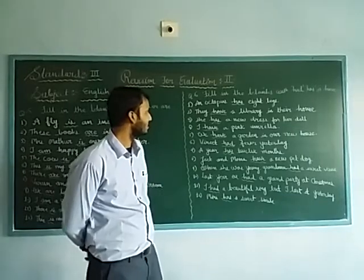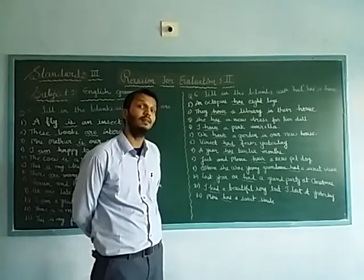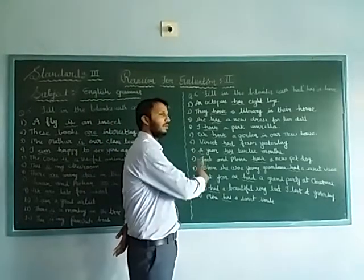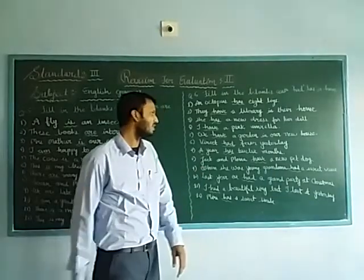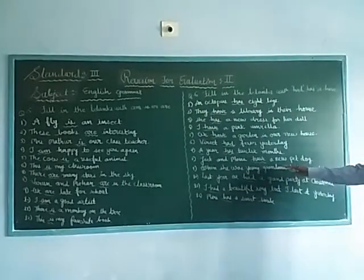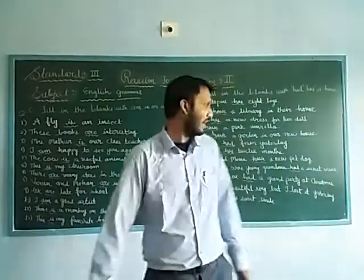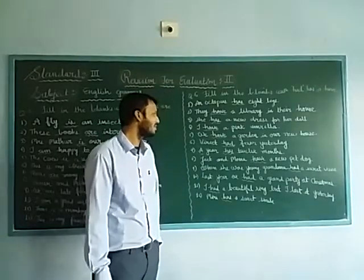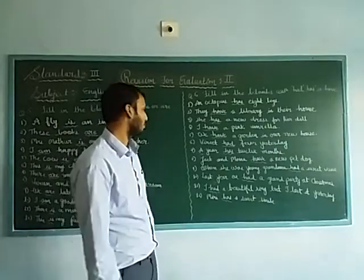Seventh number: a year blank 12 months — a year has 12 months. It is talking about one year, so the answer is 'has'. Eighth number: when she was younger, grandma blank a sweet voice — since it refers to the past, grandma had a sweet voice. The answer is 'had'.